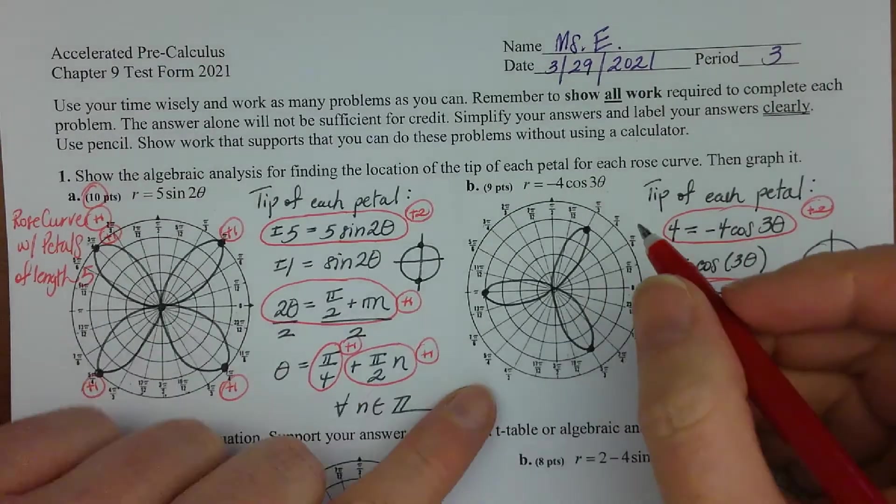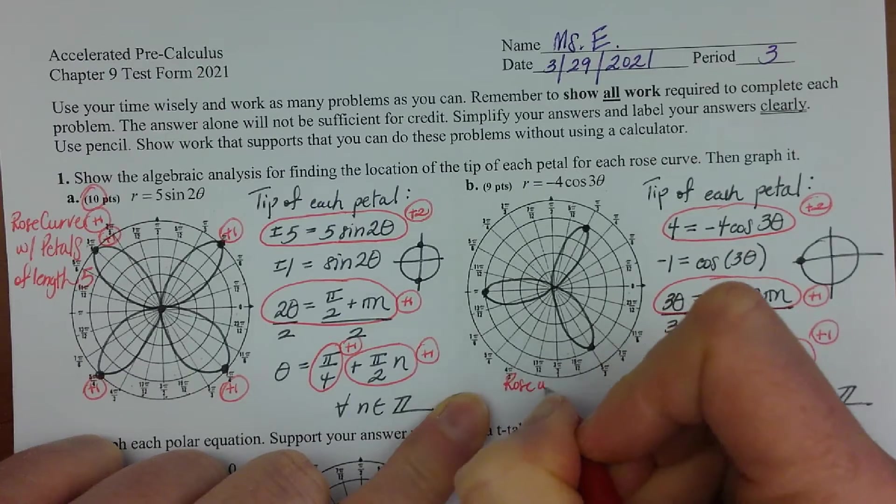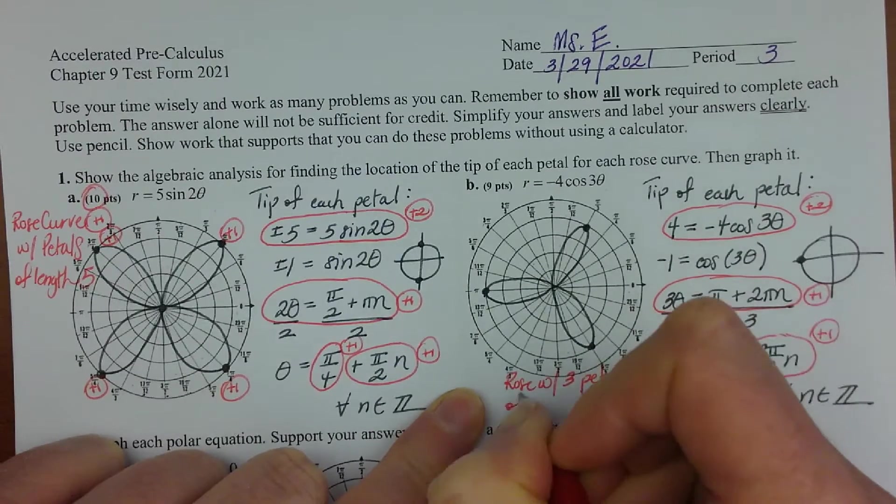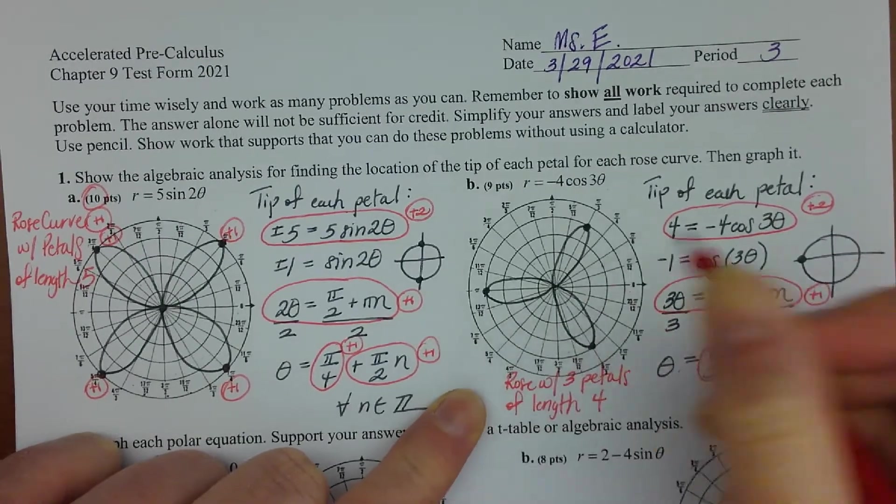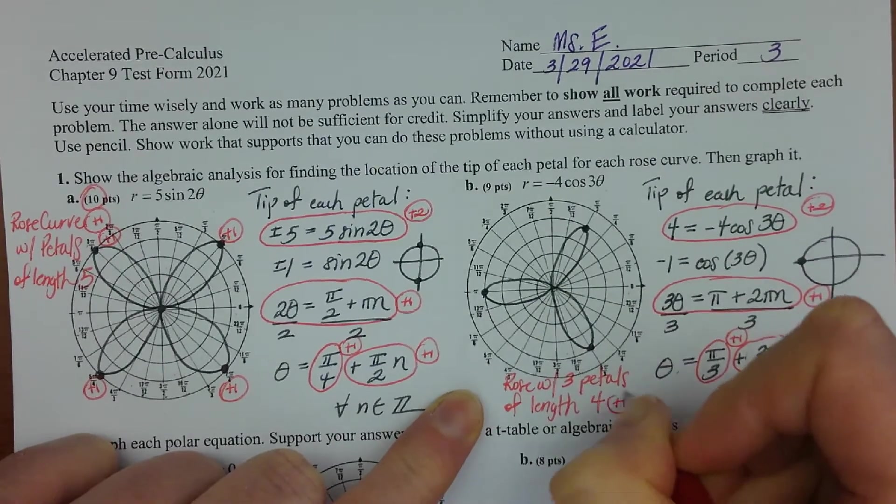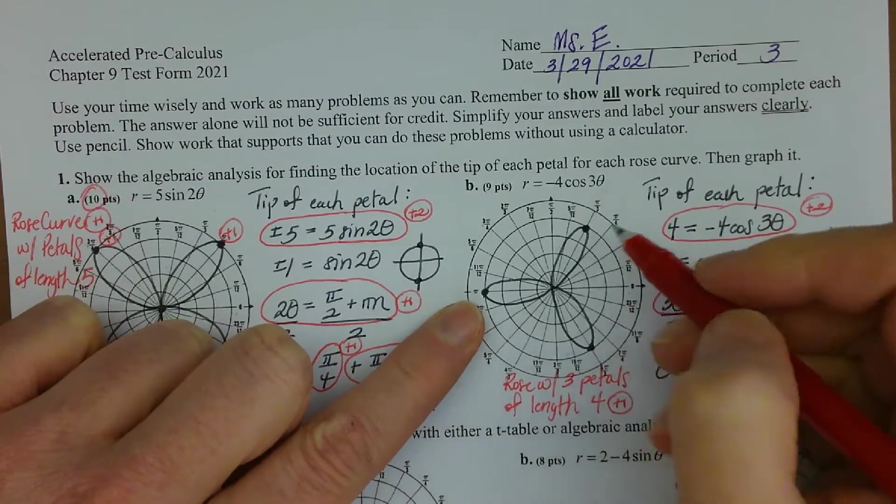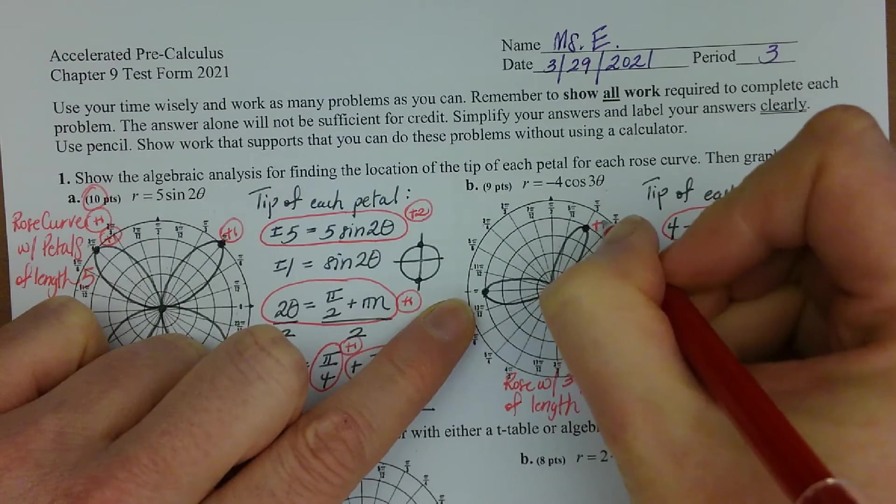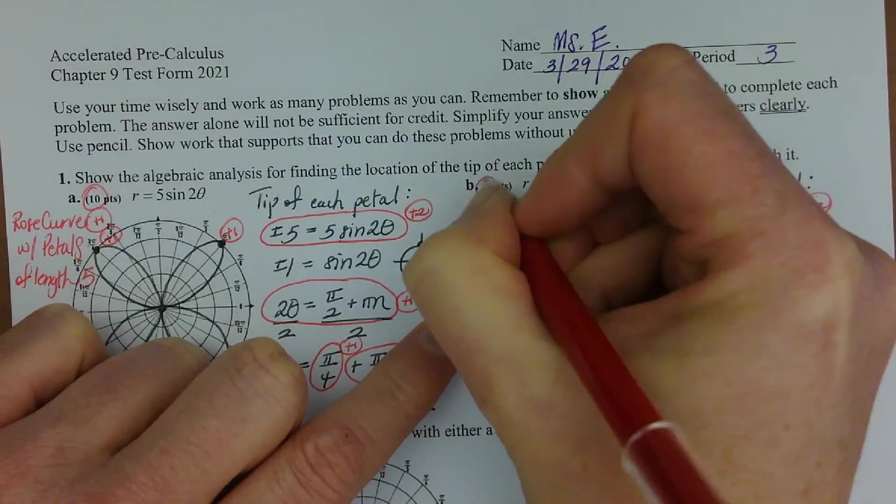And then the last four points are one point for having a rose curve with three petals of length four, even if you have them in the wrong place. One point for having that. And then the last three points are for having the tips of the petals in the perfectly right places, so one for each. There we go, and that adds up tonight.